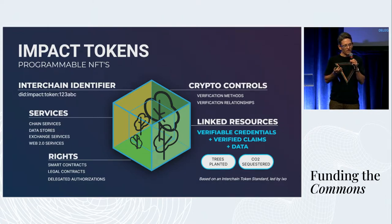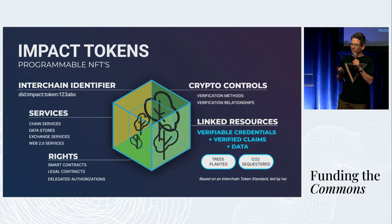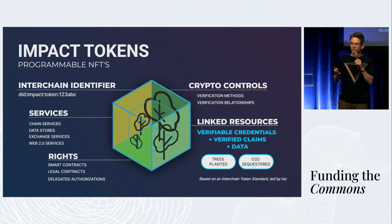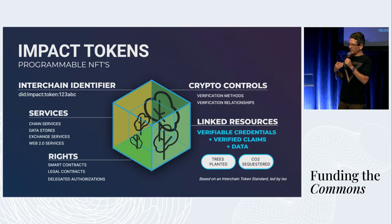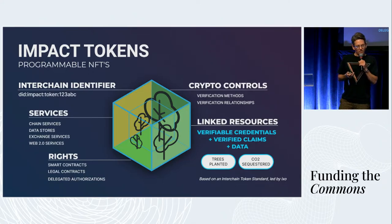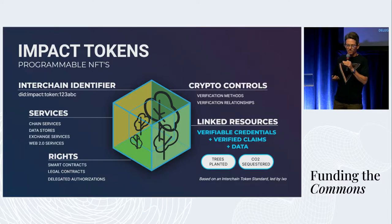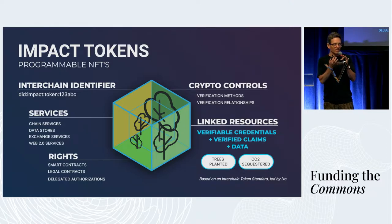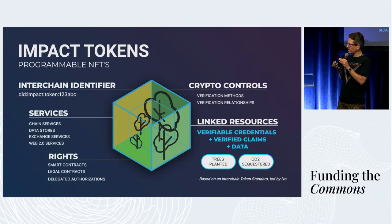This makes these impact tokens programmable, because we can now embed services — and services can be chain services, data stores, web2 services, whatever services you'd like to put in there as endpoints, essentially. And then rights — the rights can define what you can do with those services, or they can be rights expressed in smart contracts, or as legal contracts, or delegated authorizations such as ZCAPs. Embedded in these tokens is the data, the verifiable credentials, the claims, and general data as well. And you can link any resources to this. So now we've got a package of digital assets that is not only an information carrier, but it's programmable, and you can do really interesting things with it.